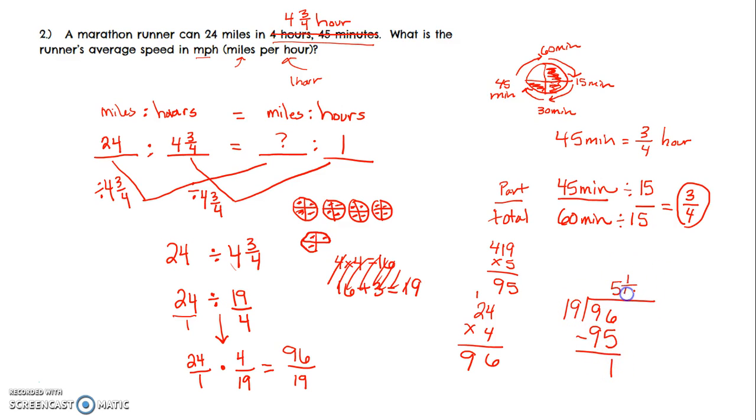So this runner can go five and one-nineteenth miles per hour. It's not a nice, but well, it is a lovely answer, but I mean, it's not pretty, but who cares? So this is five and one-nineteenth miles per hour. So that runner can run just a little bit more than five miles per hour. Hopefully that helps.